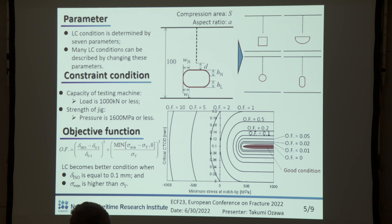For the objective function, we use the following equation. Using this equation as the objective function, LC becomes a better condition when the critical CTOD evaluation value is equal to 0.1 mm and the residual stress is higher than the yield stress — 444 MPa — as shown in the right figure.